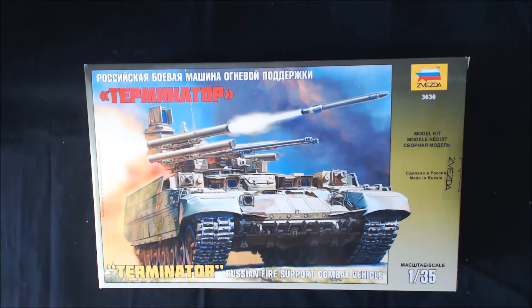Hi everybody, welcome to a quick kit review. This is the Zvezda Terminator, a Russian fire support combat vehicle in 1:35 scale. The box number is 3636.